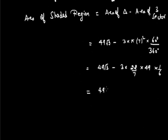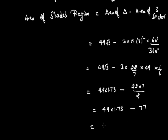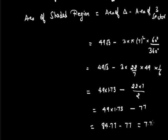So this equals 49 root 3 where root 3 is 1.732, minus 22 times 7 divided by 2. So 49 times 1.73 minus 77. With 7 as common factor, 49 times 1.73 equals 84.77, minus 77 equals 7.77 cm squared. So this is the area of the shaded region not included in the section.